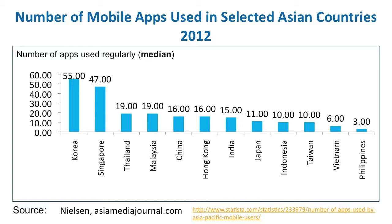So as smartphone ownership continues to increase, using apps to access the internet or social networking platforms is also on the rise, as is the usage of mobile apps. Games seem to be the most popular app category across the Asia-Pacific region, with the exception of Indonesia, where music and social networking apps are being favored. In reality, mobile learning is gradually getting popular and most of its share in popularity is related to the affordability and accessibility of mobile phones.